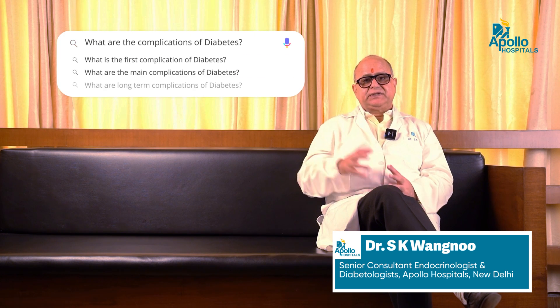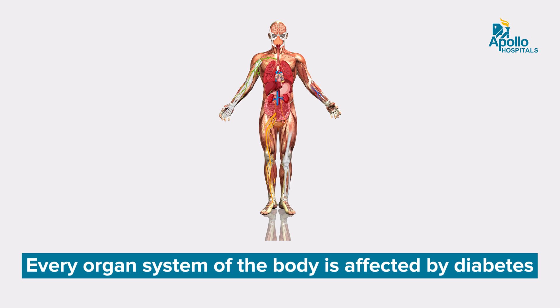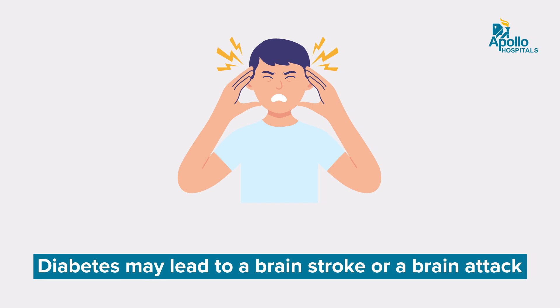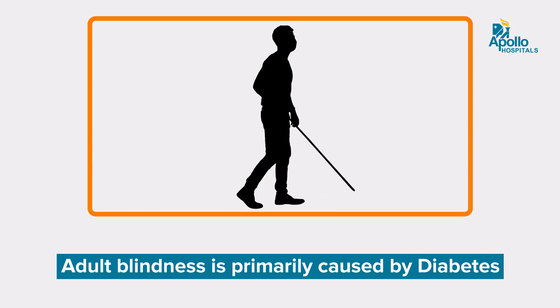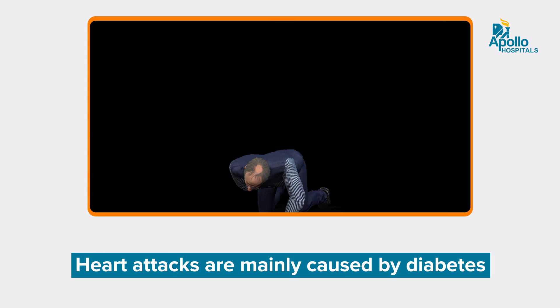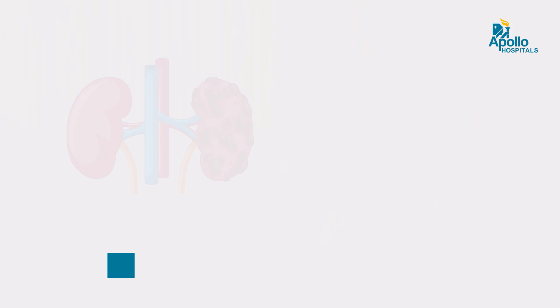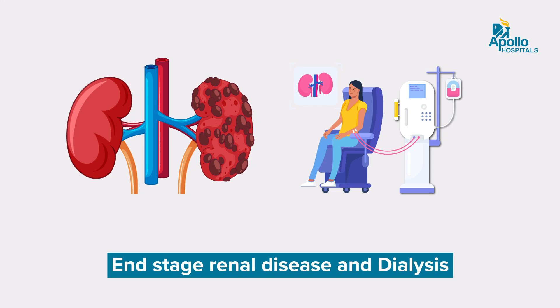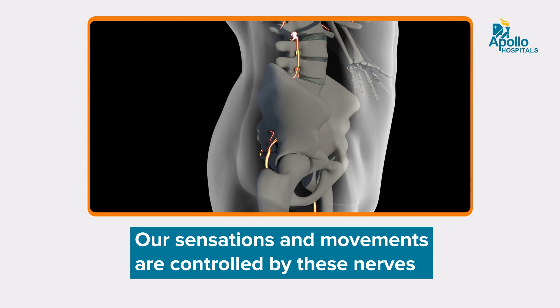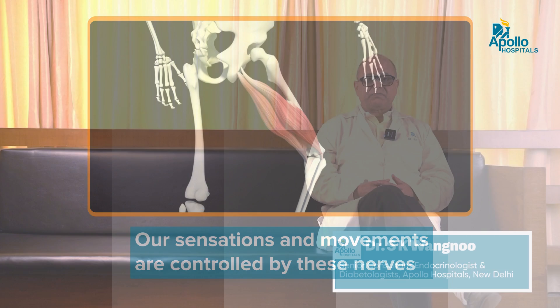What are the complications of diabetes? Diabetes is a disease which affects each and every organ system of the body. Starting from the brain, it may cause brain attacks or strokes. Then comes the eyes — it is one of the major causes of adult blindness and causes retinopathy. Then comes the heart — diabetes is a major cause of heart attacks and coronary artery disease, and more than 80% of patients die because of heart disease. Then come the kidneys — the major cause of end-stage renal disease and dialysis is diabetes. Then come the nerves which control our movements and sensation, and the major cause of lower limb amputation is diabetes.